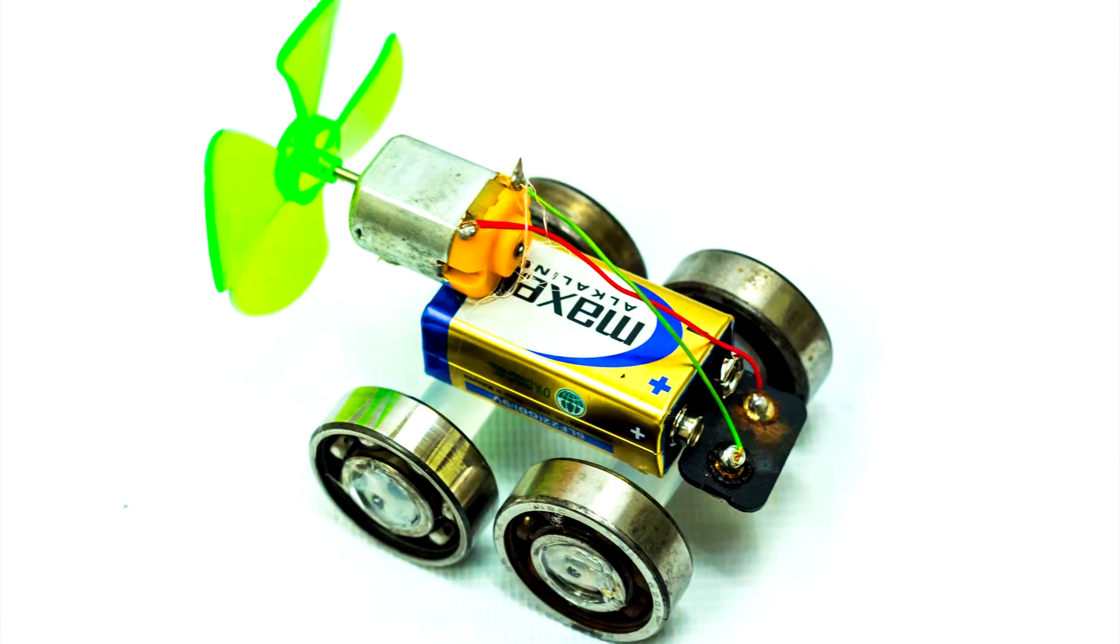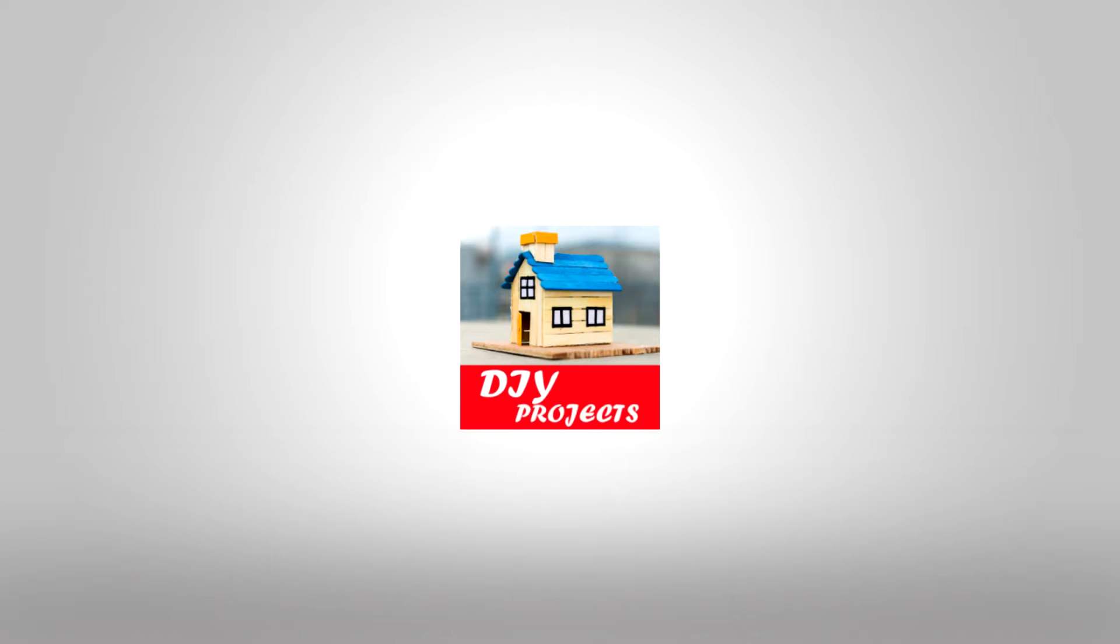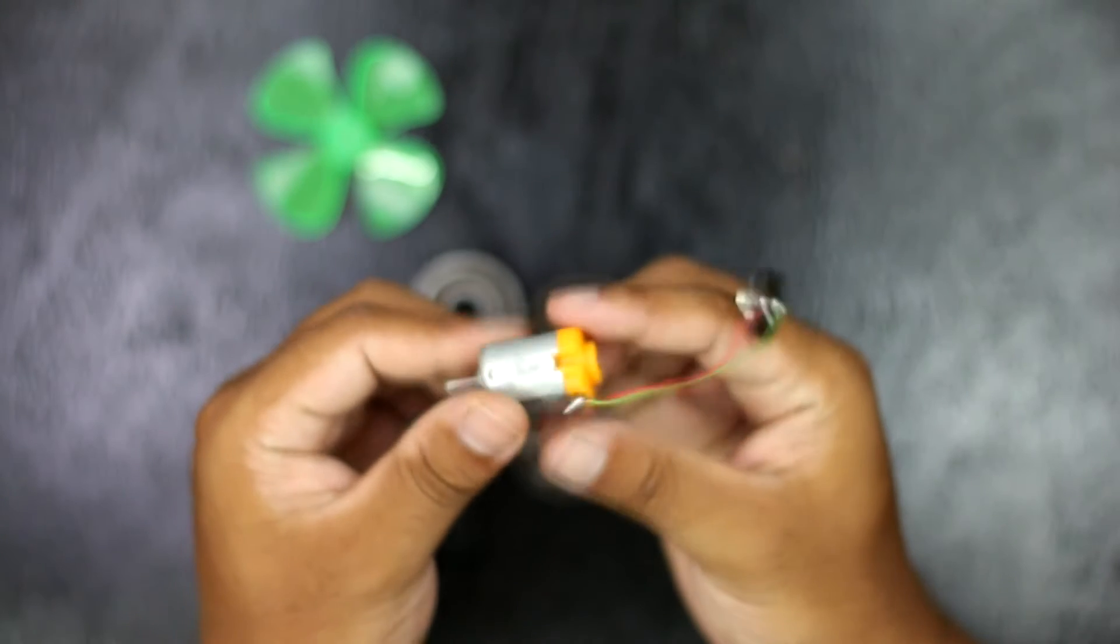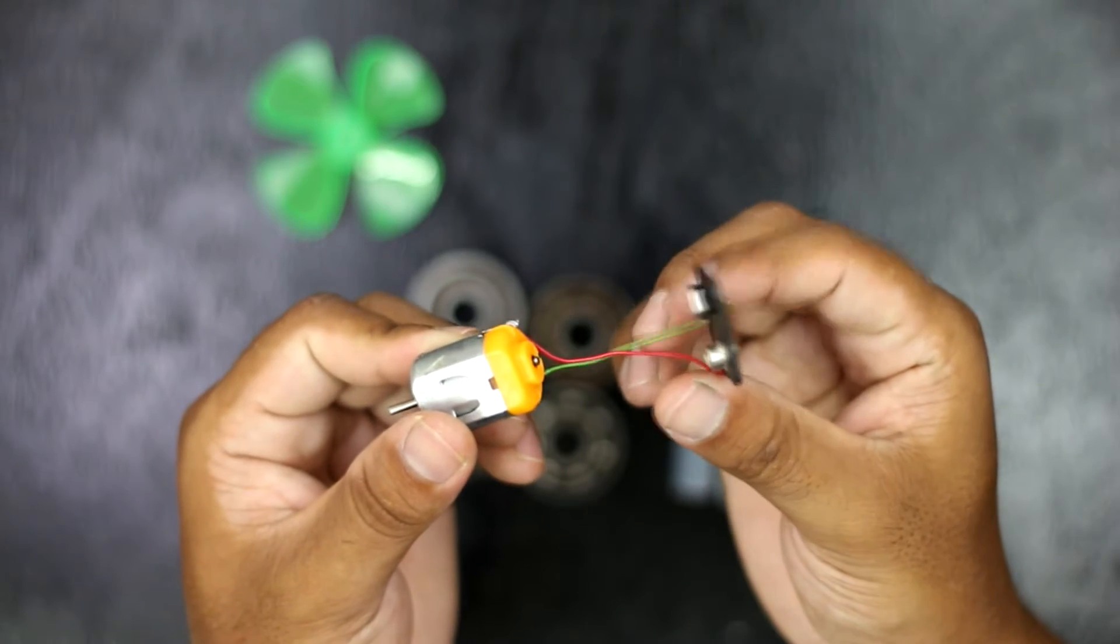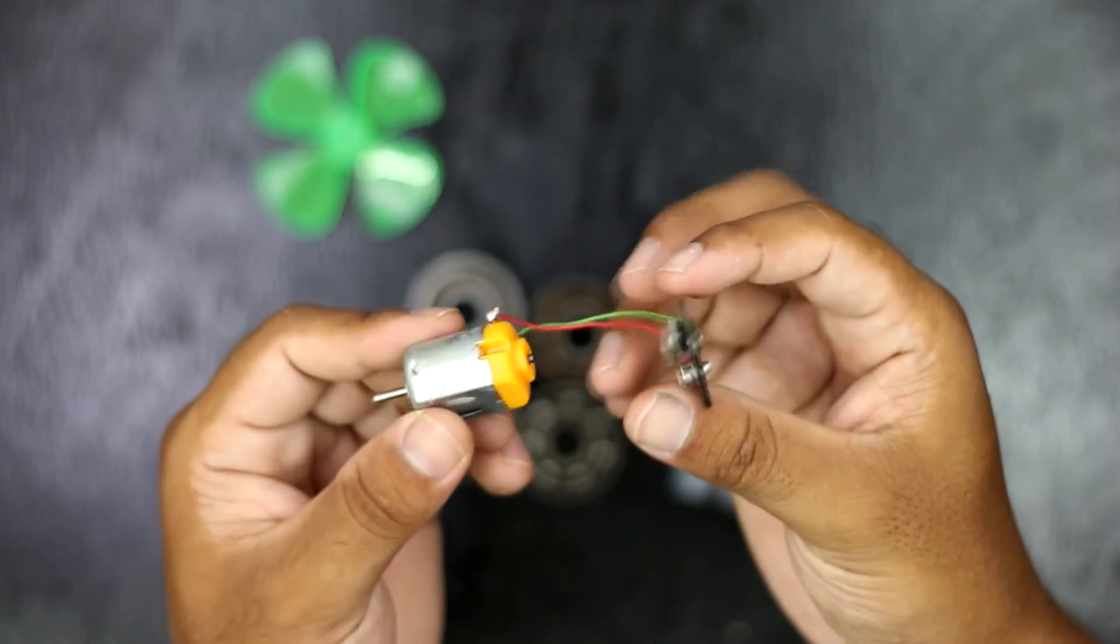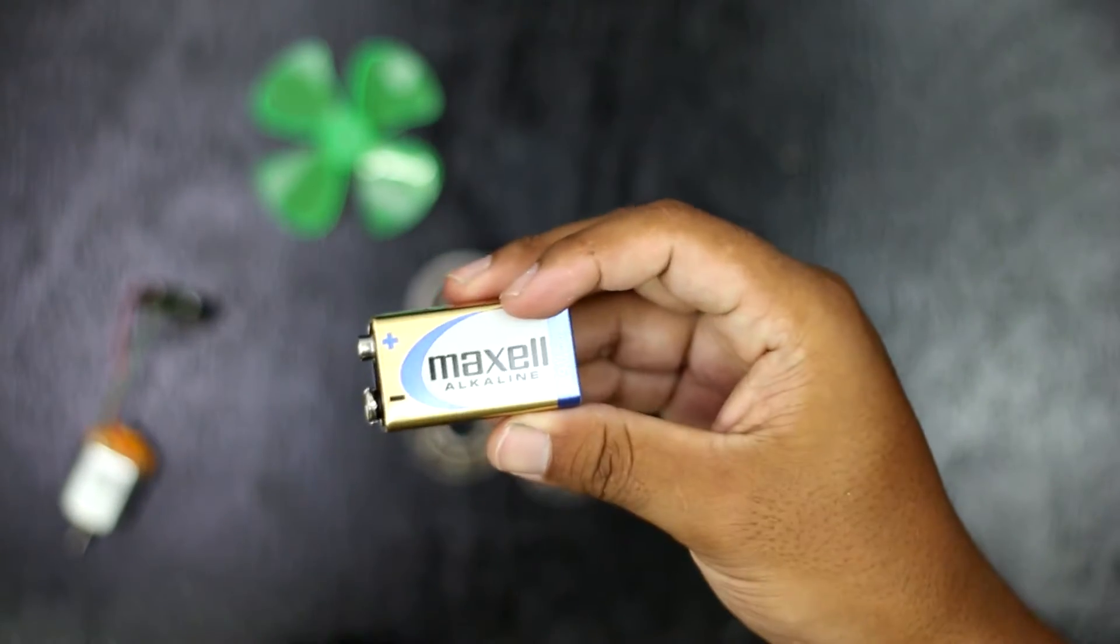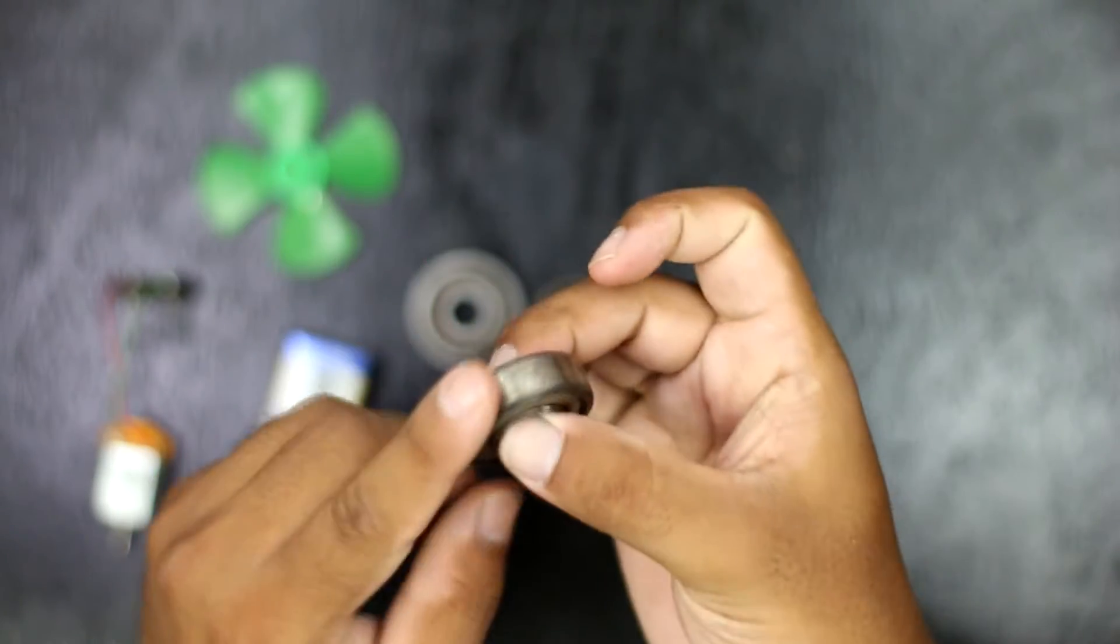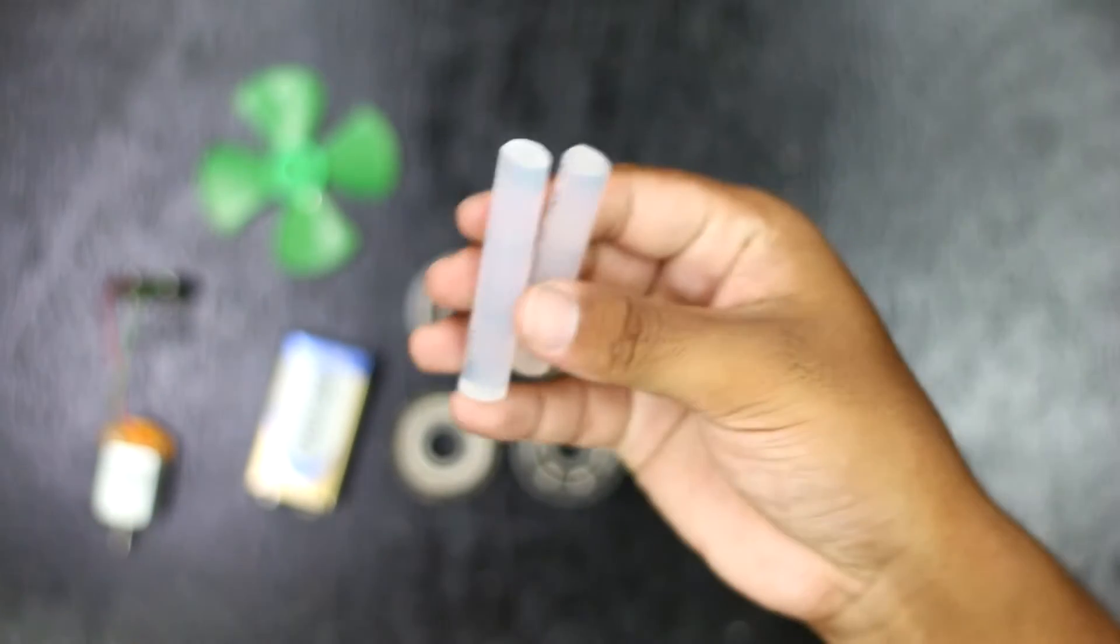Materials I have used to make this simple car are: a DC motor with battery clip, a 9-volt battery, a fan blade for the DC motor, four bearings, and hot glue.